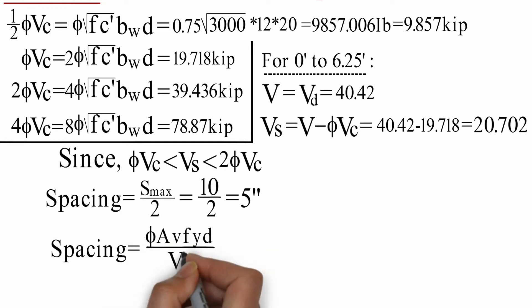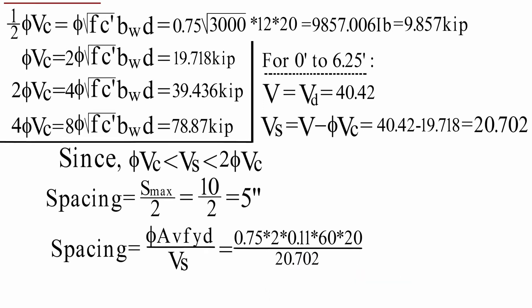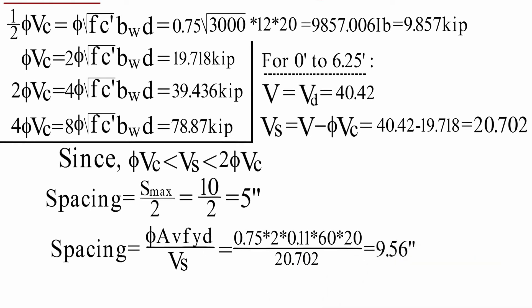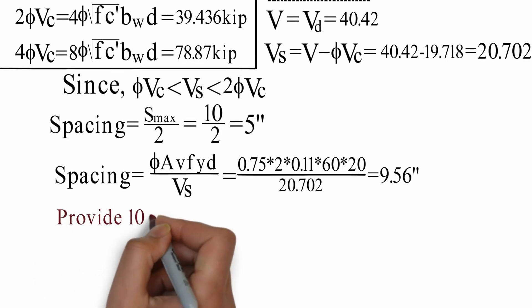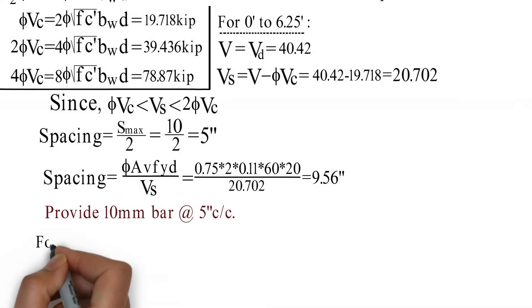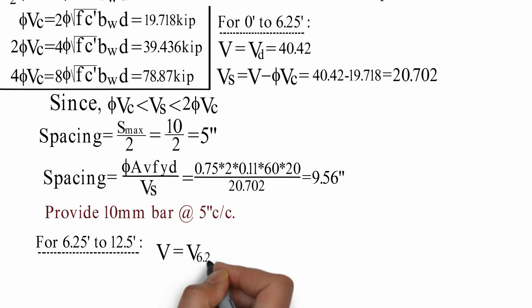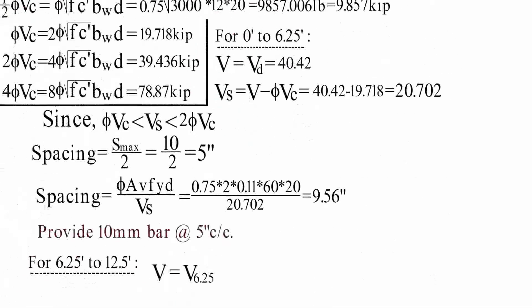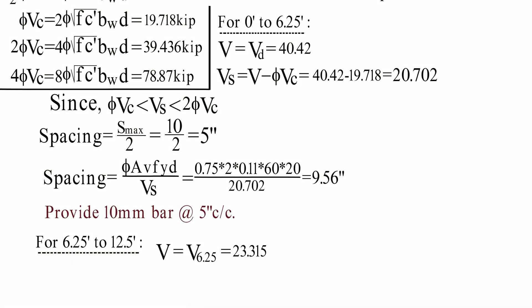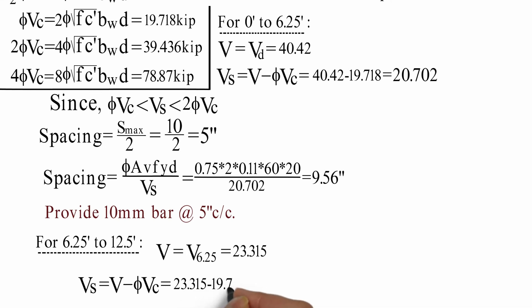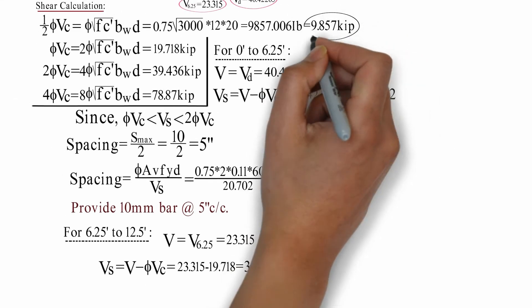D divided by 2, manboshi d. Equal 9.56 inches. Therefore, the minimum — provide 10mm bar at the rate of 5 inches center to center. For 6.25 to 12.5 feet, V equals V at 6.25 equals 13.315. V_s equals V minus V at 5 feet. V at half of 5 feet: 3.597 — that is half of 5 feet.